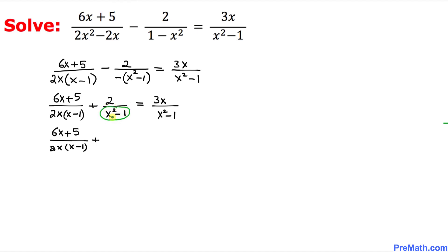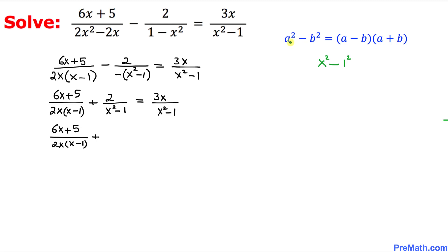Let's focus on x squared minus 1. We can write 1 as 1 squared, so this is a difference of two squares: x squared minus 1 squared. Using the formula a squared minus b squared equals (a minus b)(a plus b), we can factor x squared minus 1 as (x minus 1)(x plus 1).